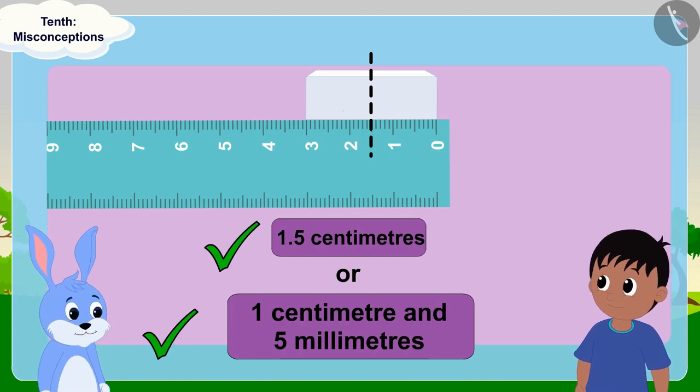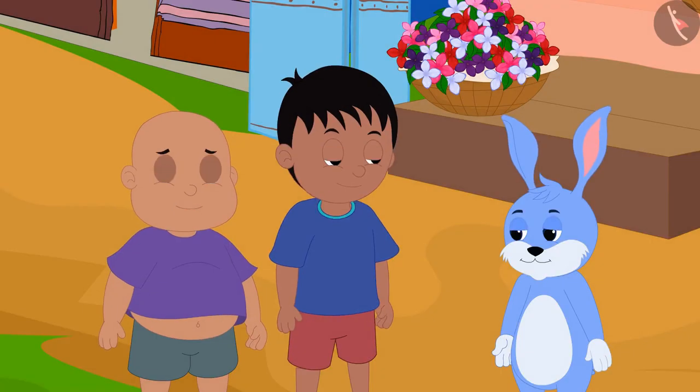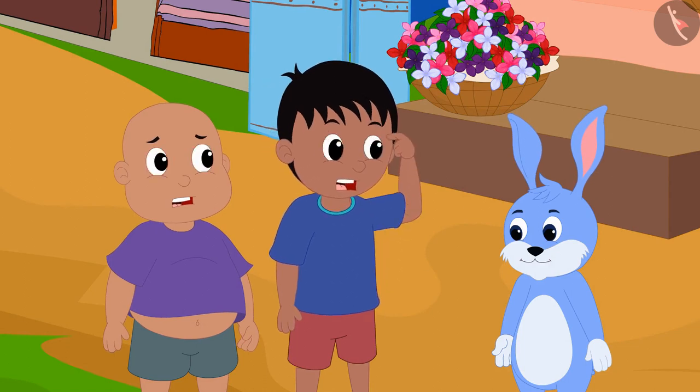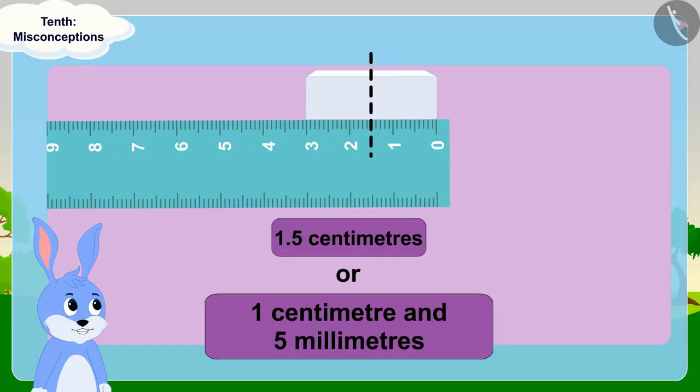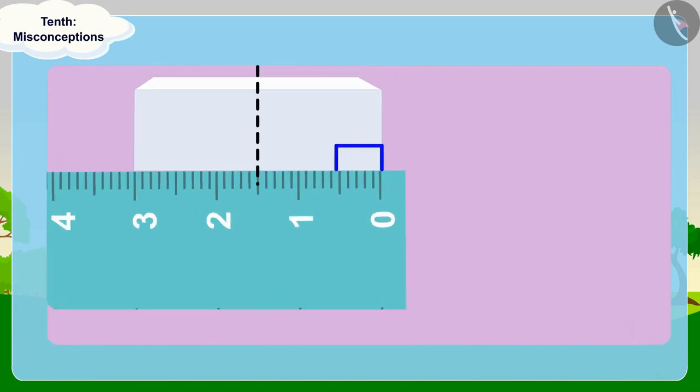Bunny told Raju and Babloo something, but they could not understand anything. Children, is what Bunny said correct? Half of the eraser is five tenths more than a centimeter, so we can write it as 1.5 using decimals.